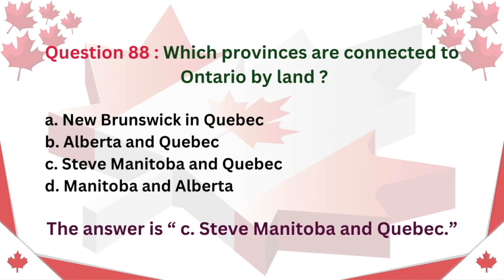Question 88. Which provinces are connected to Ontario by land? A. New Brunswick and Quebec B. Alberta and Quebec C. Manitoba and Quebec D. Manitoba and Alberta.